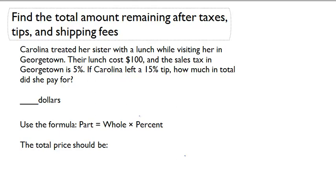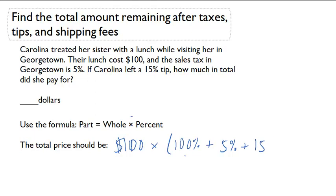The total price, using the formula part equals whole times percent, will be $100 times 100%, plus the 5% sales tax, plus the 15% tip. So her total should be $100 times 1.20, and that's going to be $120.